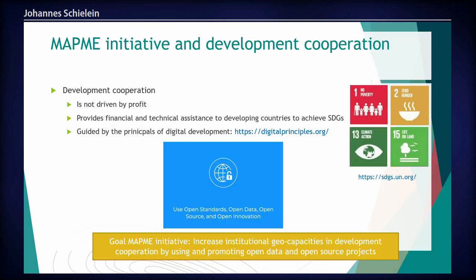What do we do in development cooperation? We are not driven by profit; we provide financial and technical assistance to developing countries. We provide loans and grants to achieve the SDGs. We finance projects, and my colleague Gunnar from GISET is trying to provide technical information to improve projects. We are guided by the principles of digital development — using open standards, open data, and so on. It's very hard to implement that in our institutions, and we are just taking the first steps.